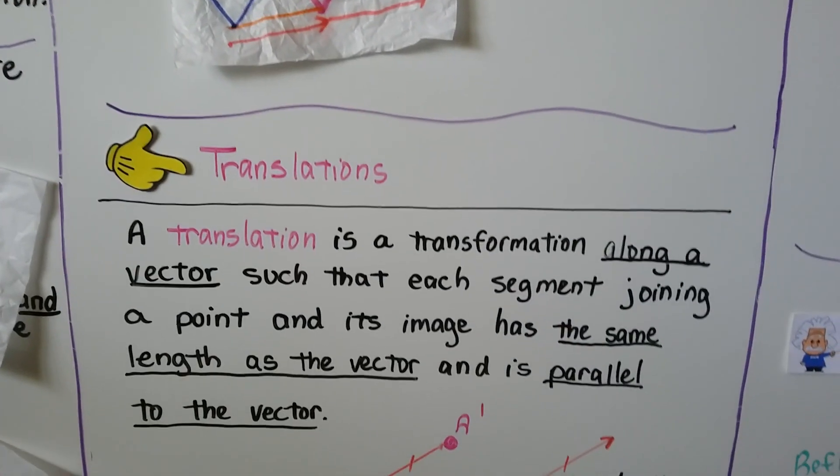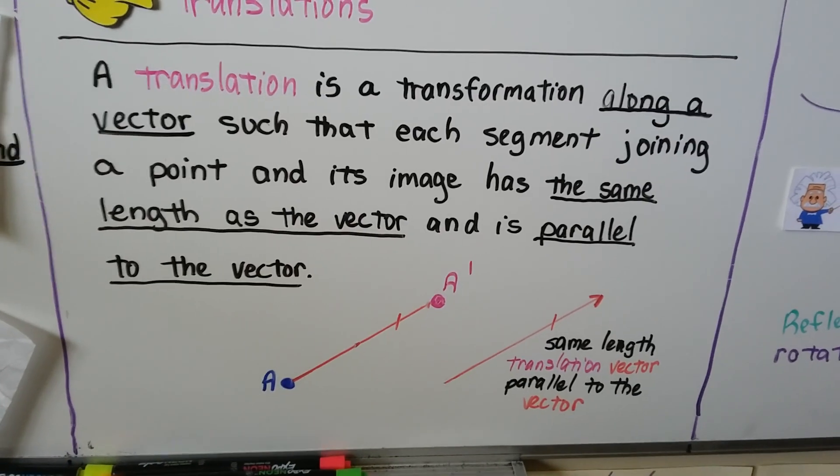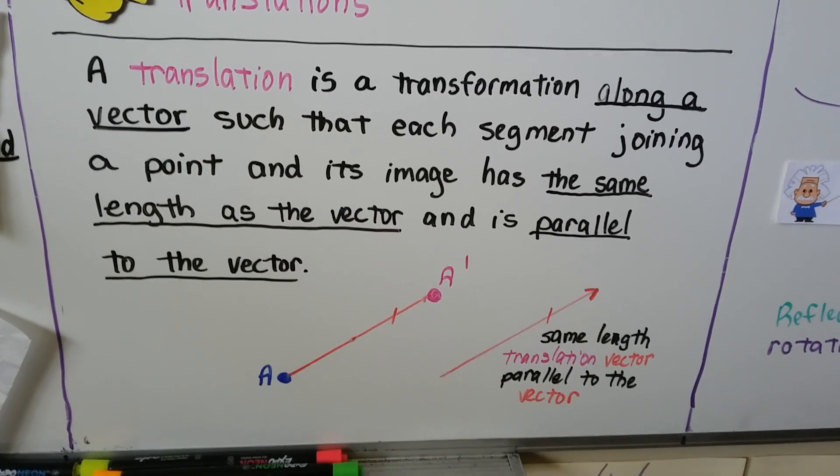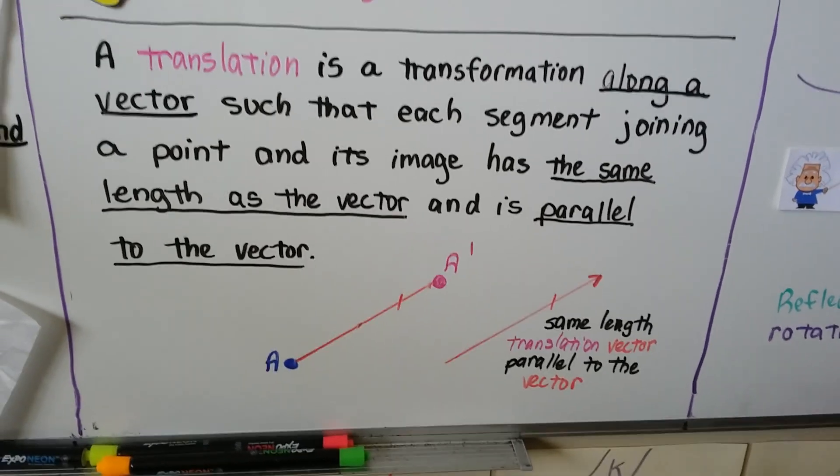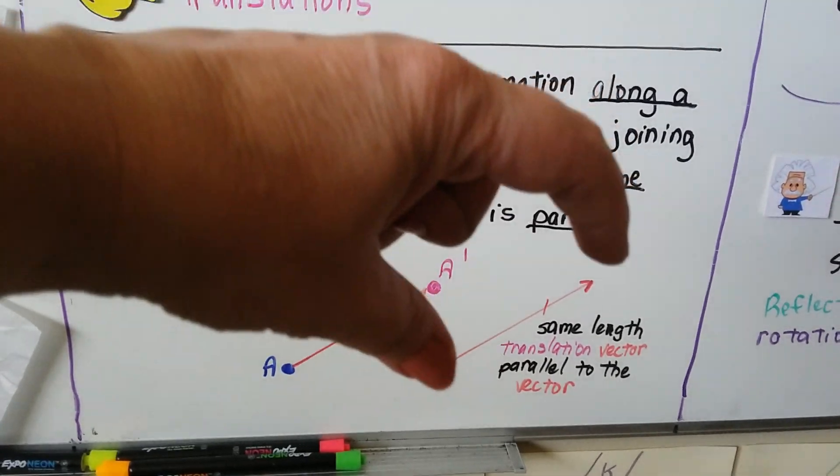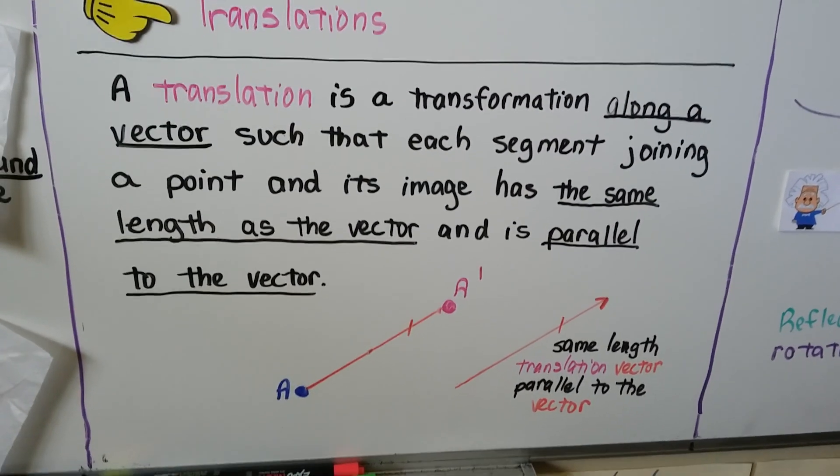So a translation is a transformation along a vector such that each segment joining a point and its image has the same length as the vector and is parallel to the vector. So they're going to be the same length and they're going to be parallel. See the little parallel mark on them?